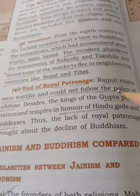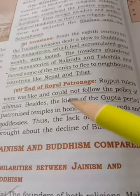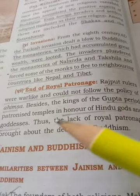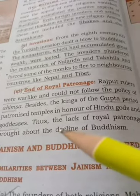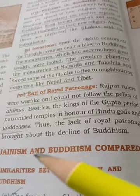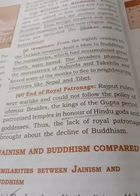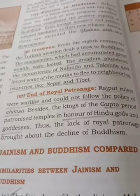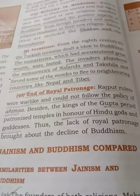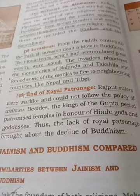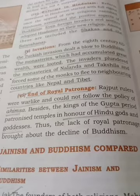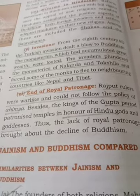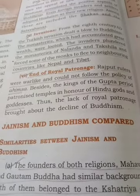Another factor was the end of royal patronage. Rajput rulers were warlike and could not follow the policy of Ahimsa. The kings of the Gupta period patronized temples in honor of Hindu gods and goddesses. Thus, the lack of royal patronage brought about the decline of Buddhism. Earlier, rulers like Ashoka had supported Buddhism, helping it spread rapidly, but later the Rajputs and Gupta-era kings moved away from it.